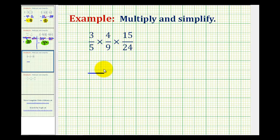For the first fraction, three and five are both prime numbers. For the second fraction, the prime factorization of four would be two times two, and the prime factorization of nine would be three times three. For the third fraction, the prime factorization of fifteen would be three times five, and for twenty-four, we'd have four times six, but four is equal to two times two and six is equal to two times three. So we have three factors of two and one factor of three.